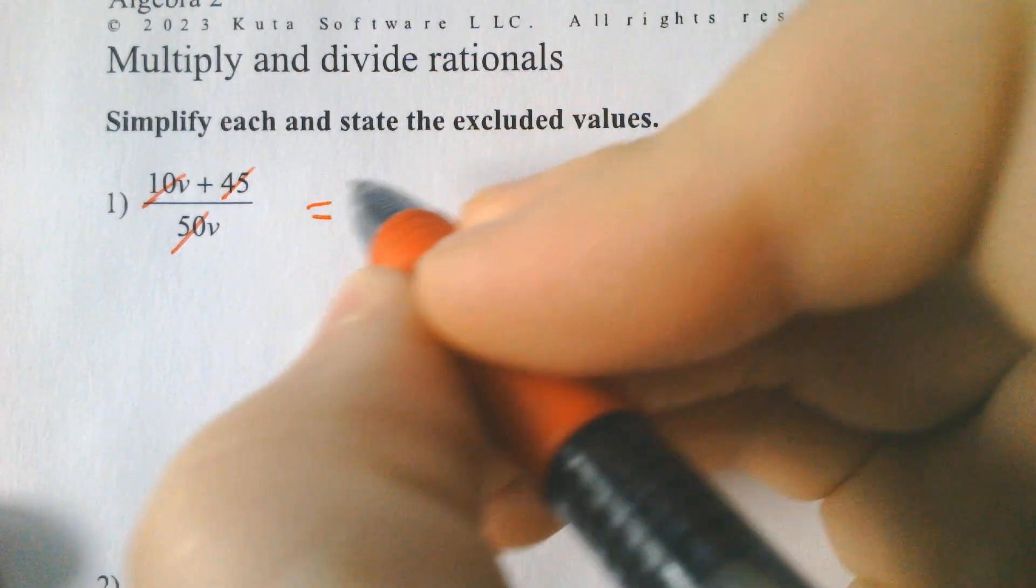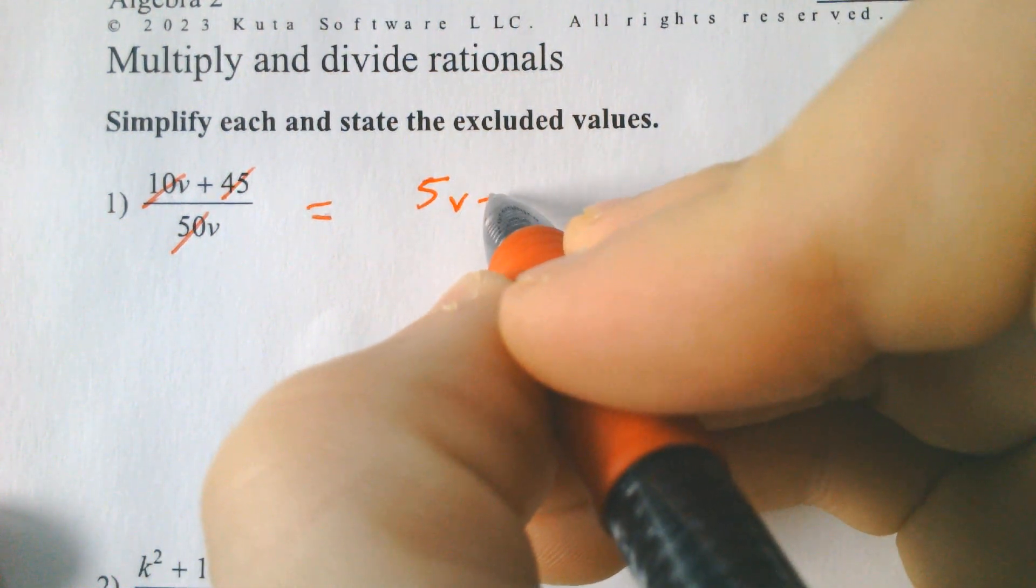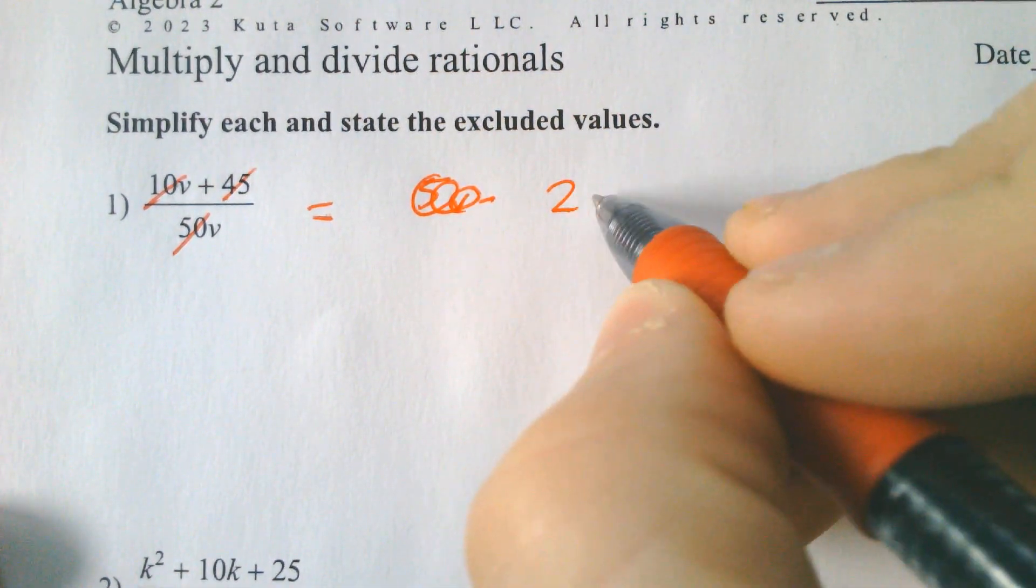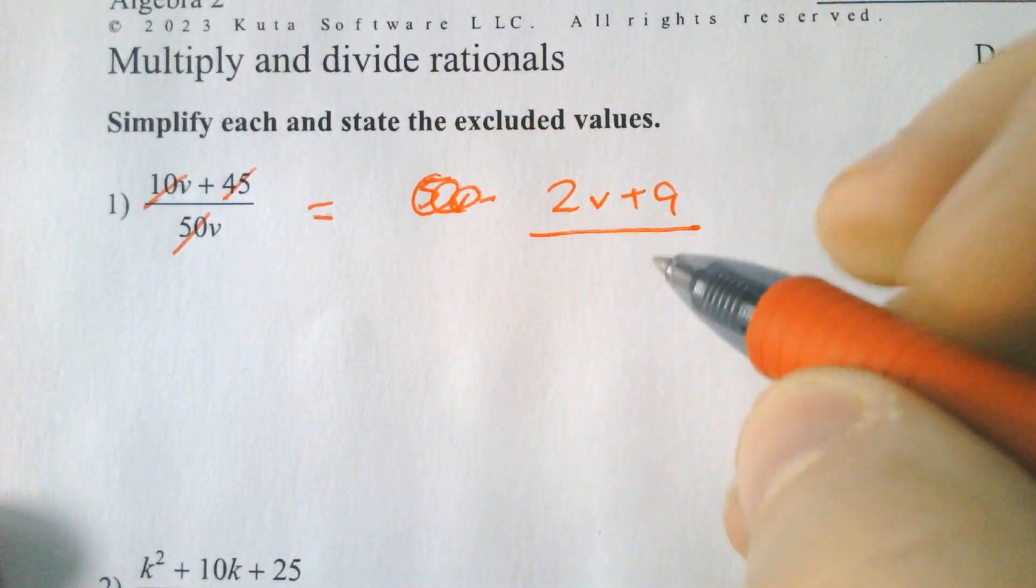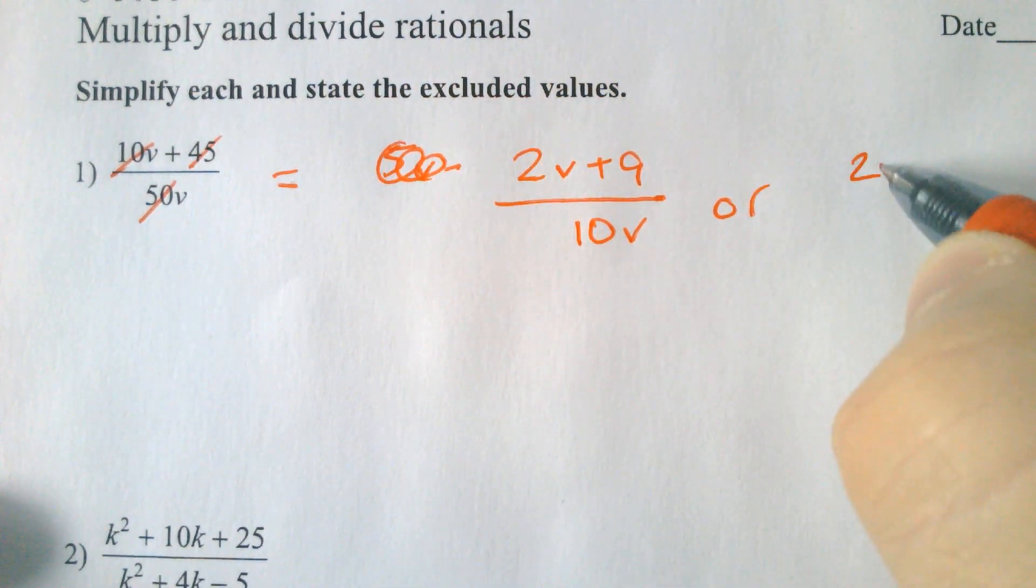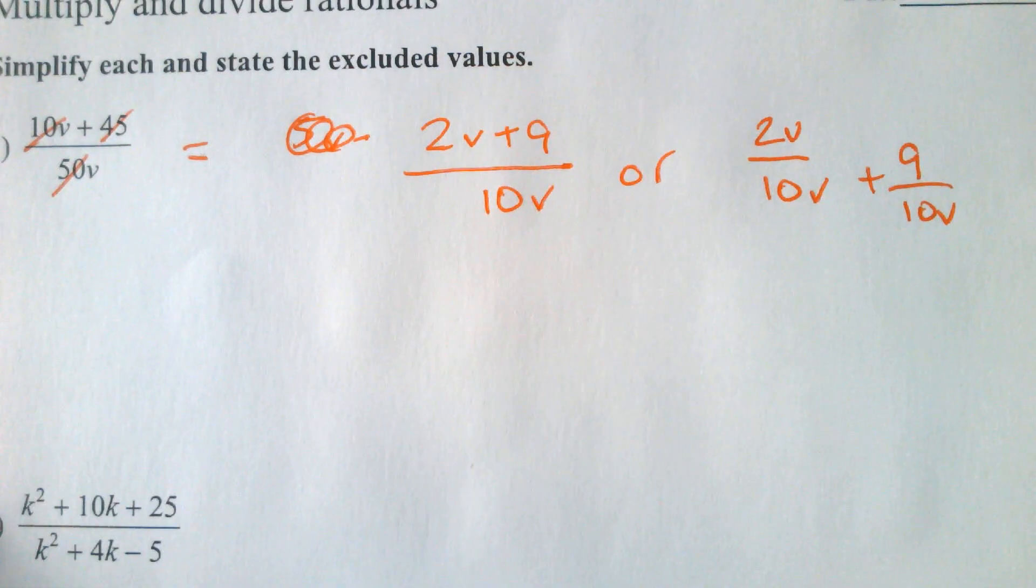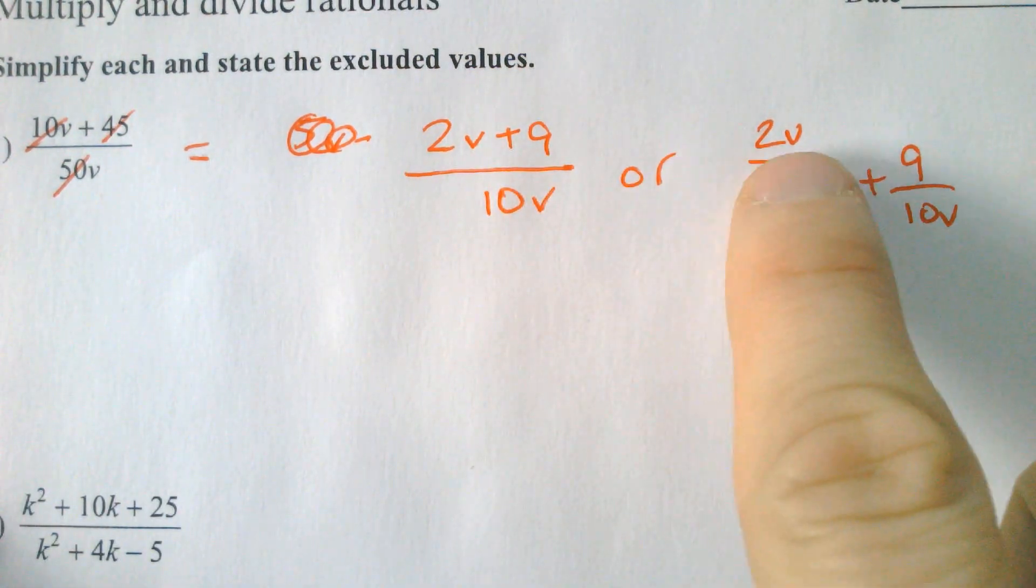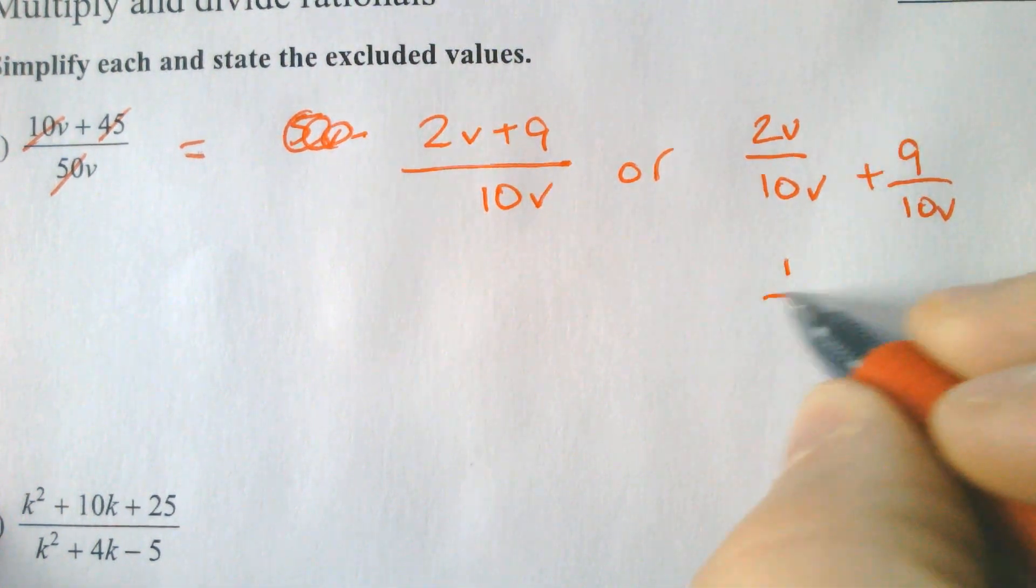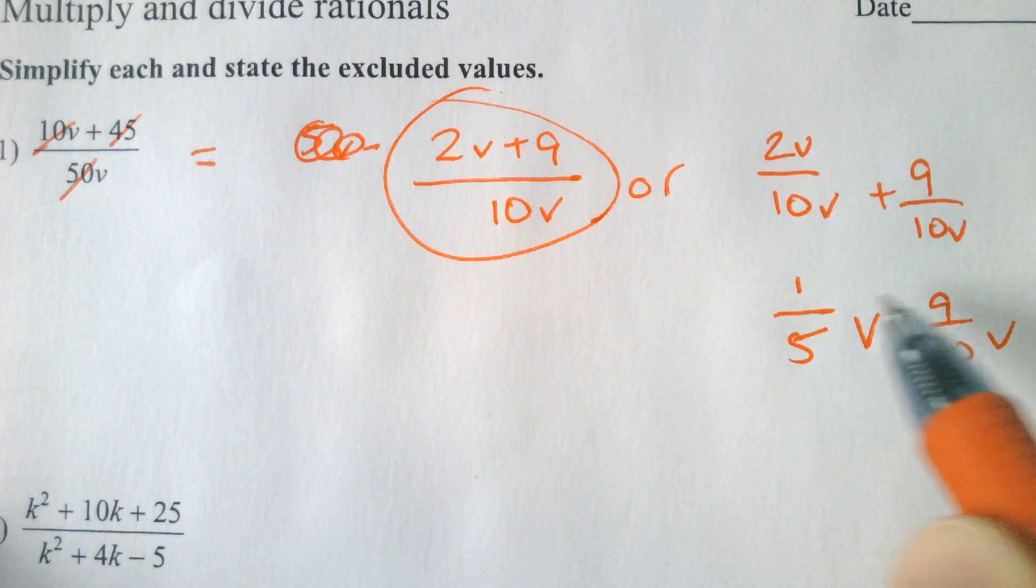So here, 10v over 50v and 45 over 50v would simplify, and you would just divide everything by 5, and you would end up with 2v plus 9 over 10v. Or you could do 2v over 10v plus 9 over 10v, which has an added benefit because 2 over 10 and v over v would cancel, and you would actually end up with 1/5 plus 9 over 10v. Both of these are acceptable answers.